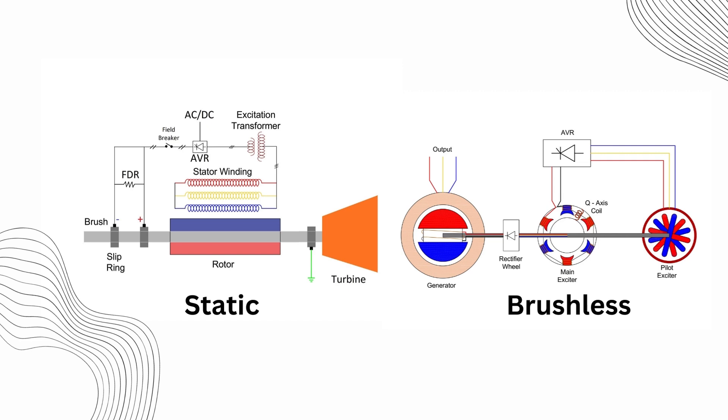However, the brushless system has a significant drawback: slower response time. When you change the set point voltage in a static system, the generator's output voltage changes within 40 to 45 milliseconds. In contrast, the brushless system takes longer because the AVR doesn't control the rotor current directly. It controls the field current of the main exciter, which then goes through multiple stages before reaching the rotor winding. In summary, while the brushless system offers durability and lower maintenance, the static system provides faster response times.